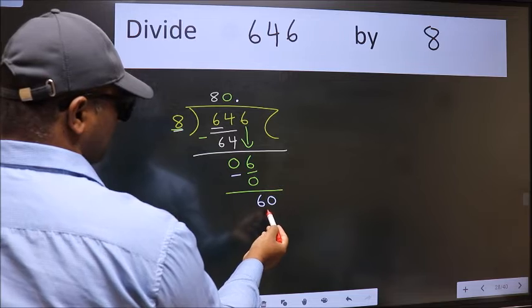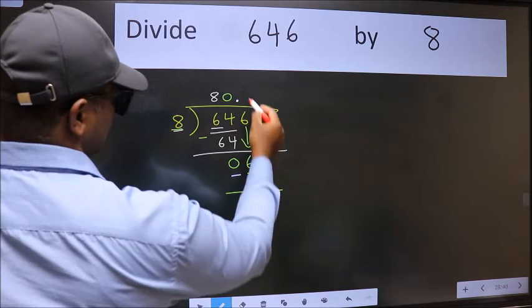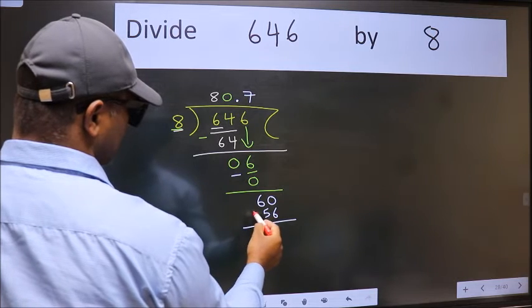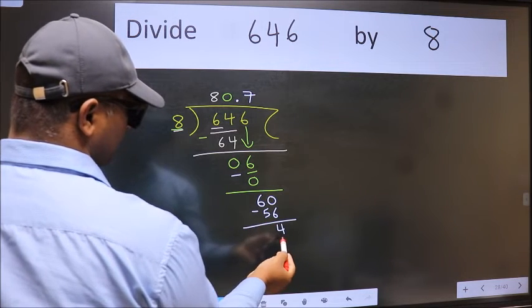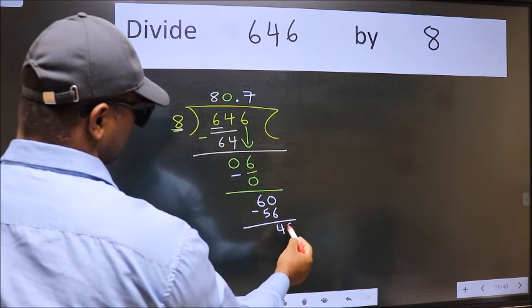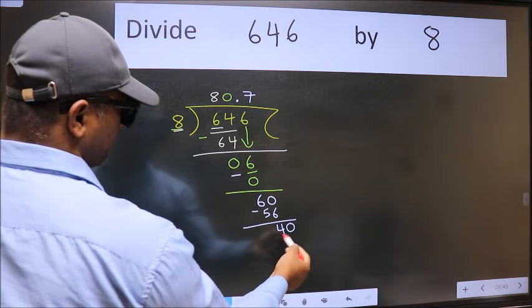So 60. A number close to 60 in 8 table is 8 7s, 56. Now we subtract. We get 4. 4 smaller than 8. And we already have the decimal. So directly take 0. 40.